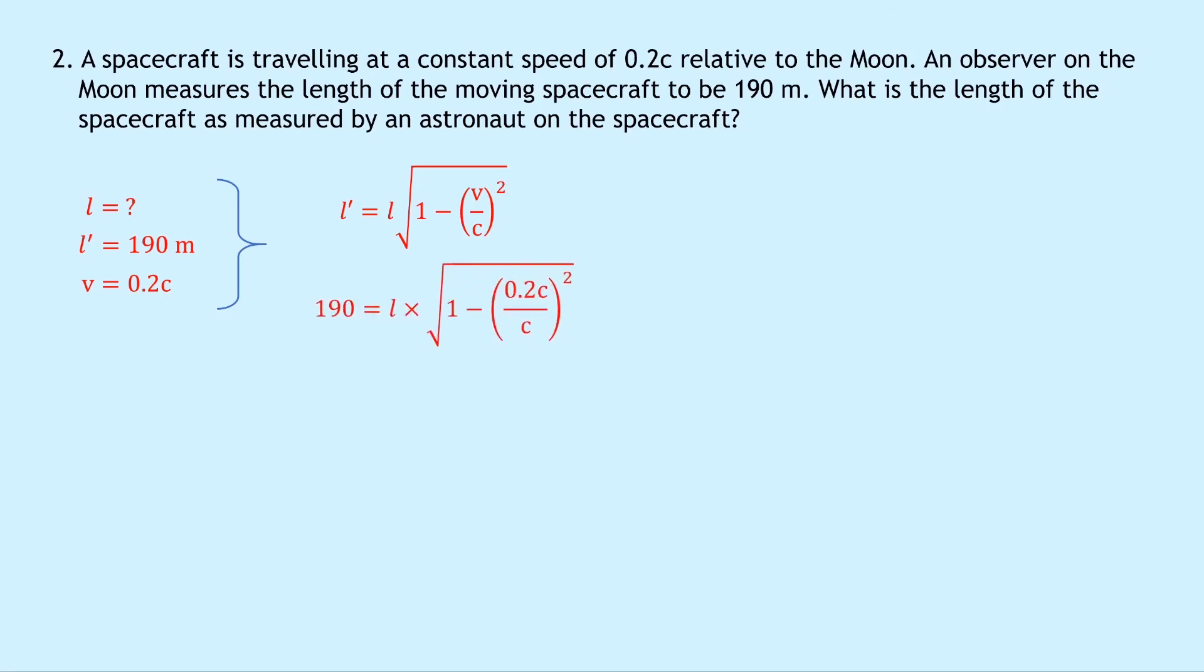Substituting in the numbers now we get 190 equals L times the square root of 1 minus 0.2C over C all squared. And what I'd recommend to do now is put this into your calculator and then to get L on its own we divide 190 by your answer to this term.